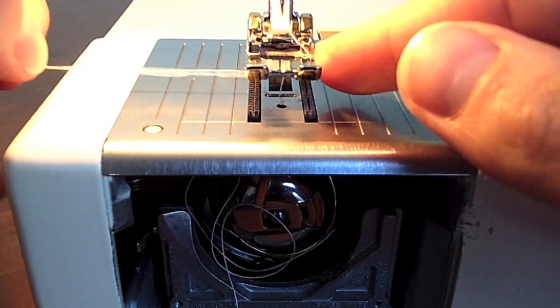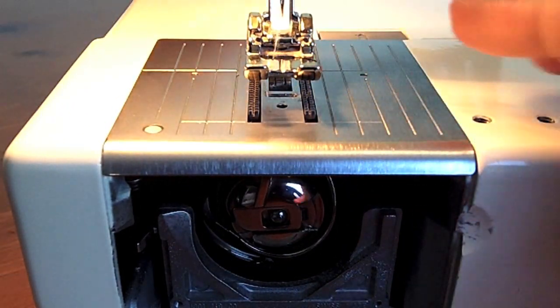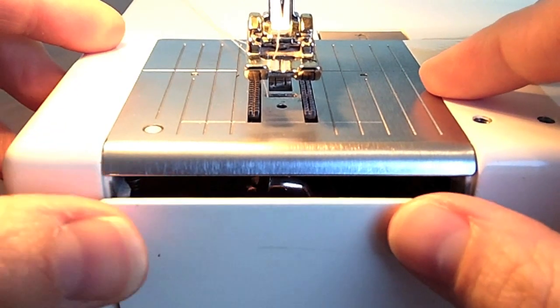Then put it through the little groove on the foot and towards the back of the machine. Close up the cover and your machine is ready to sew.